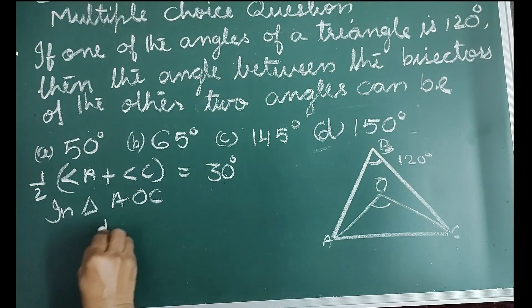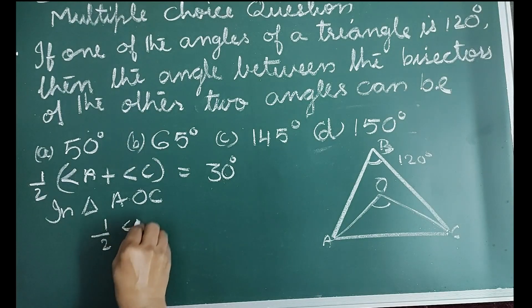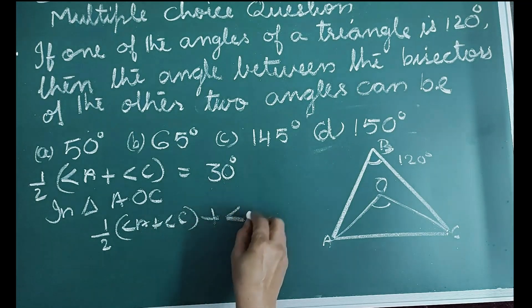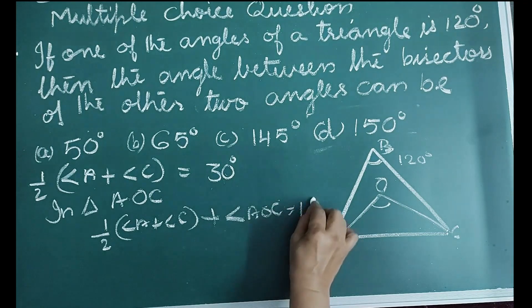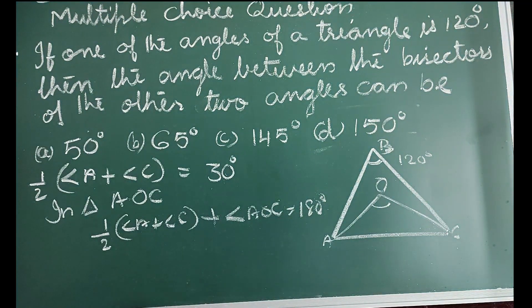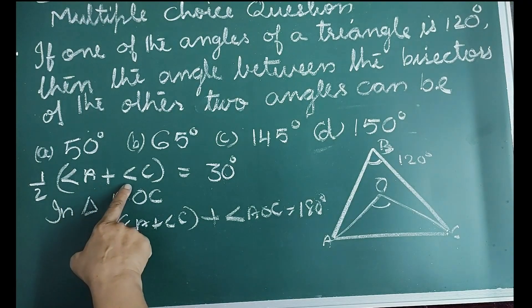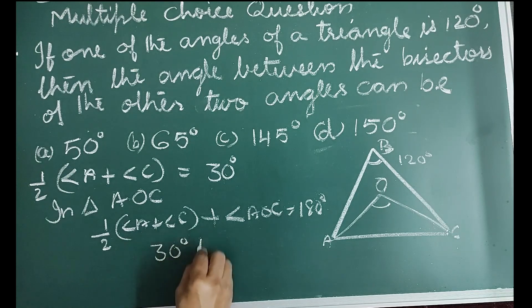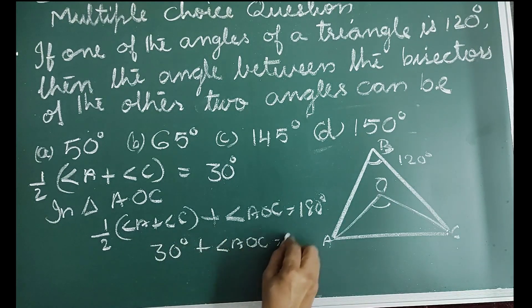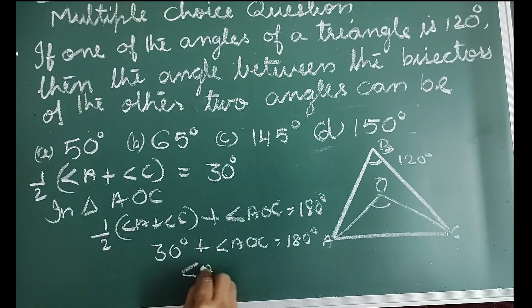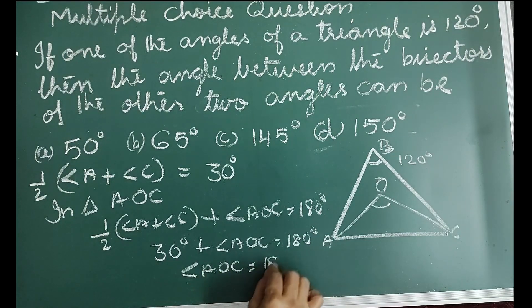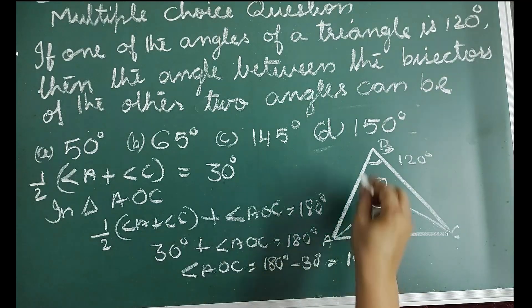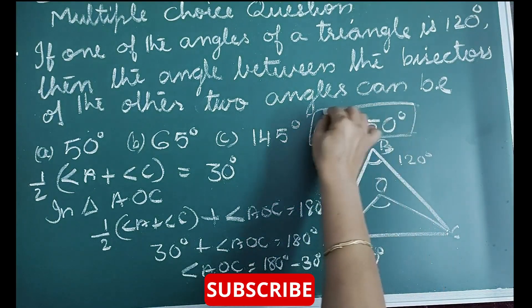So we can write: half of (angle A + angle C) + angle AOC = 180°. Since we already got half of (angle A + angle C) = 30°, we have 30° + angle AOC = 180°. Therefore, angle AOC = 180° − 30° = 150°. The correct option is D, 150°.